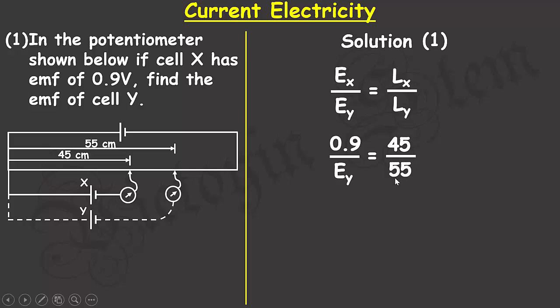If I make E subscript Y the subject of the equation, I'll have 0.9 multiplied by 55 divided by 45. If you use your calculator, the electromotive force of cell Y will be equal to 1.1 volts. Simple, isn't it?